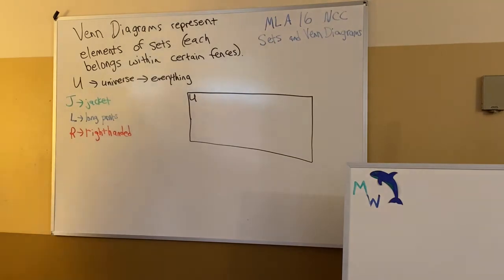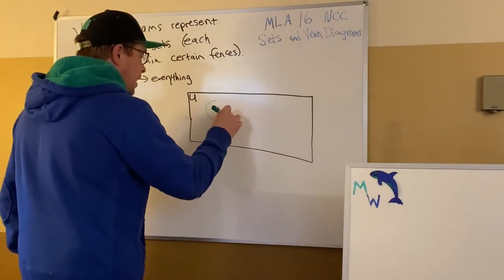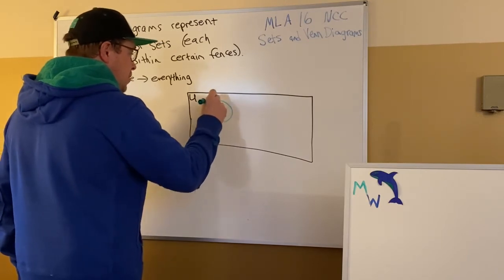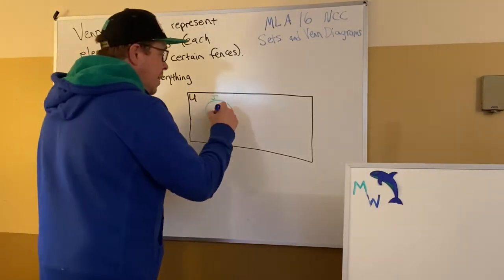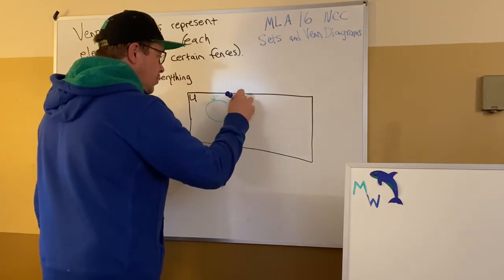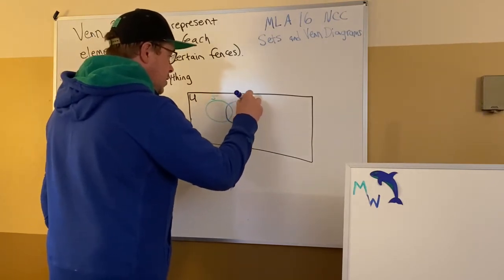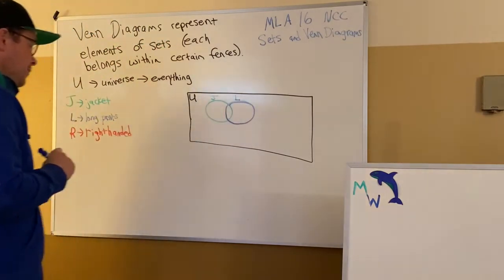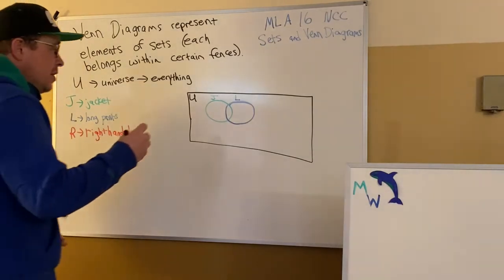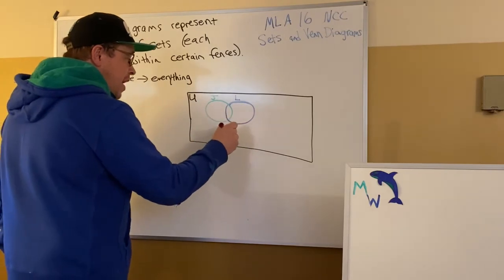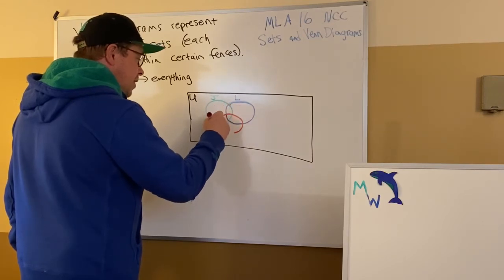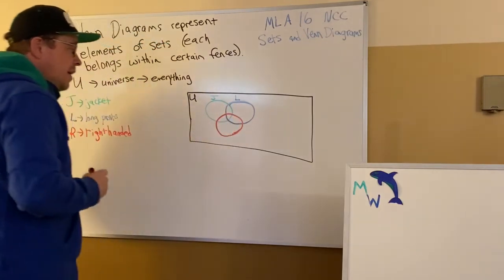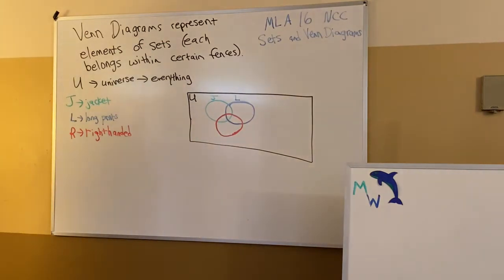The circles are going to overlap. So I have a circle for jackets. If you brought a jacket in, you're going to be somewhere in the J circle when we place you as a dot. Blue would be long pants. I need this to overlap with the J circle to allow you to have both. This circle would be capital L. And finally, we're going to look at people who are right-handed. People who declare themselves as right-handed need to overlap all the combinations. Now I'm going to go number these locations.